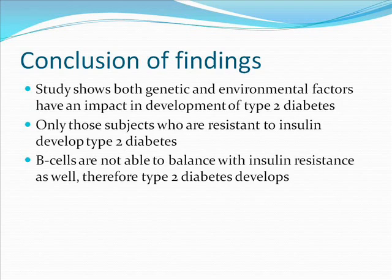The study shows that both genetic and environmental factors have an impact on the development of type 2 diabetes. The studies of relatives and twins showed that genes are indeed involved in the development of type 2 diabetes, in particular with the aspect of glucose intolerance. Although genetic factors are involved, it was found that environmental factors play a bigger part. This is due to the finding that inheriting hyperglycemia gave a value lower than 50%. Lastly, it was found that subjects who had insulin resistance had beta cells which were not able to balance with insulin resistance, leading to the development of type 2 diabetes.